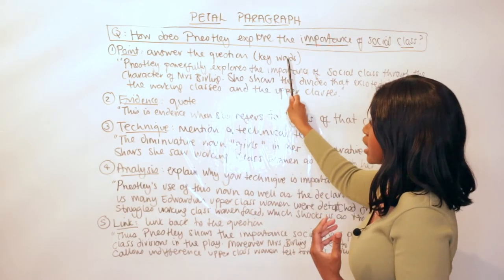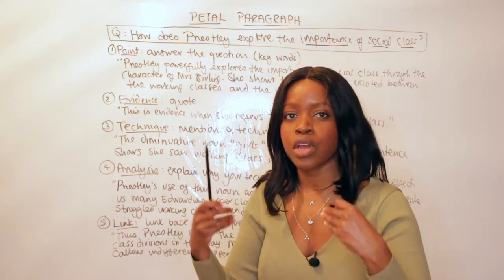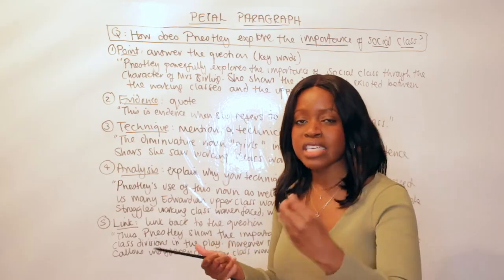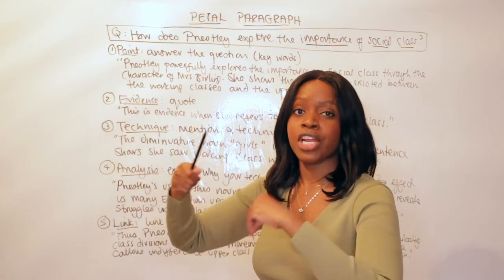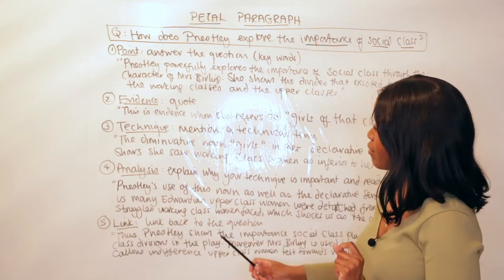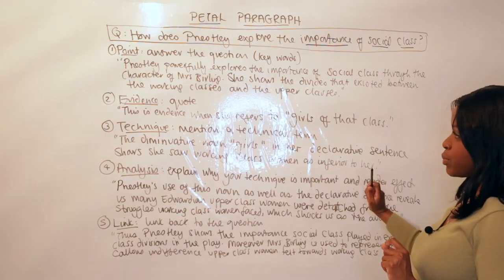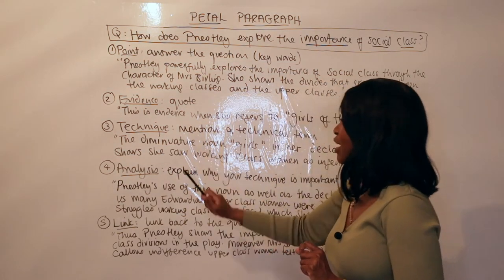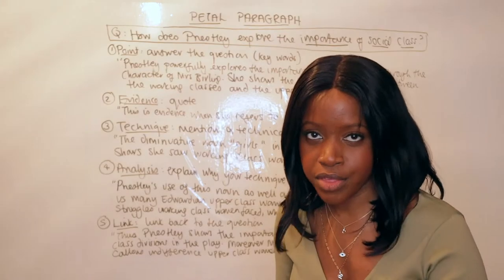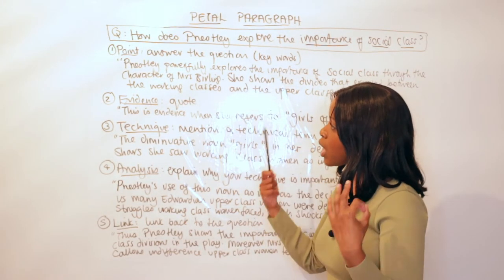The E in PETAL stands for Evidence — simply quote from the text. How do you know from the text that your point is true? Sometimes you'll have an extract in front of you; other times you use a memorised quote. Try to embed your quotation so it flows naturally. My evidence here is: when she refers to 'girls of that class' — that's the quotation from the play that supports my opening point.